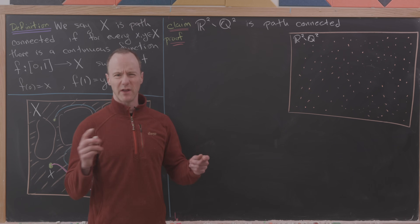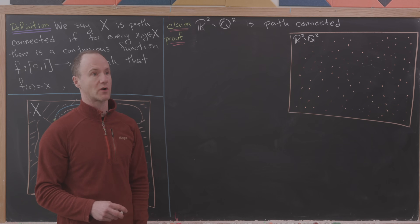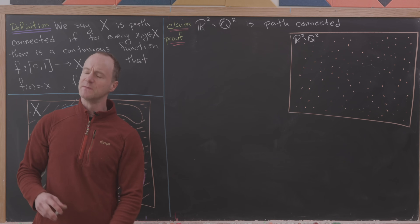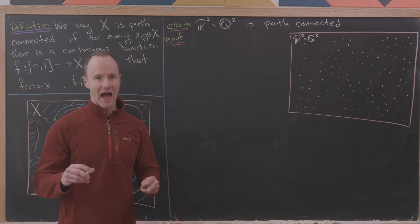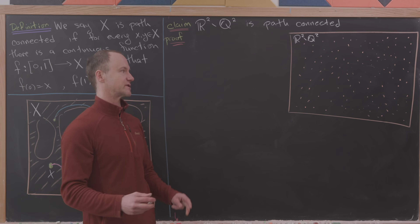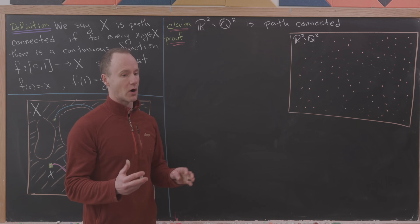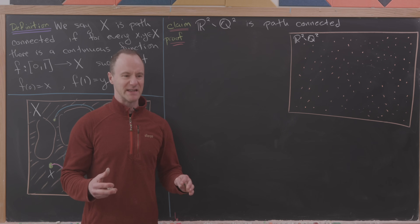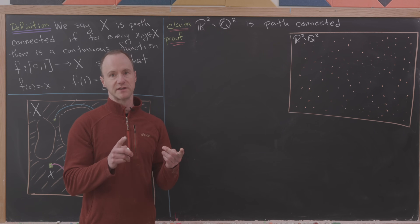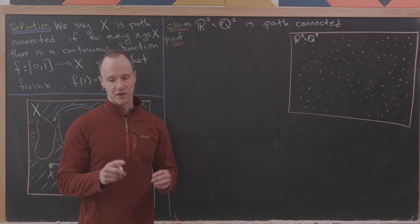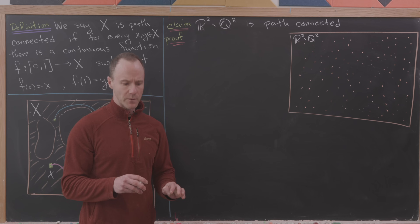So if you take R², the plane, and you take away all of the points where both coordinates are rational, then you still get something that's path connected. Until you see how this works, this seems like a crazy result. But after you see how the proof goes, you'll see that it isn't really that crazy. Why does it seem crazy? Well, Q² is dense in R². By dense we mean that between any two points from Q², no matter how close they are, there's going to be a point outside of Q². Another way of thinking about it: if you form the closure of Q², you get R².